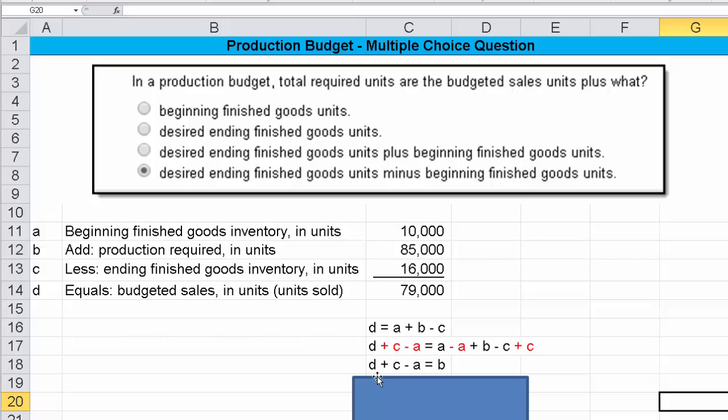All right, so B is required units. What is D? D was budgeted sales. That's that one there. Plus C. C was the desired ending finished goods. All right, finished goods. So we're in good shape there.